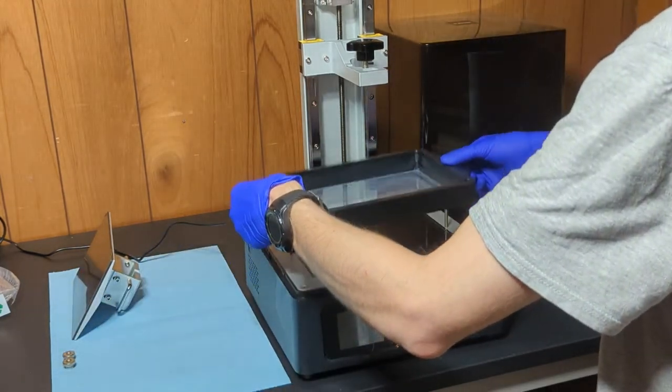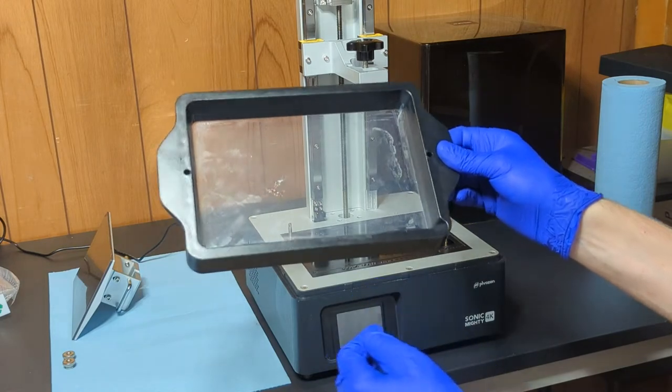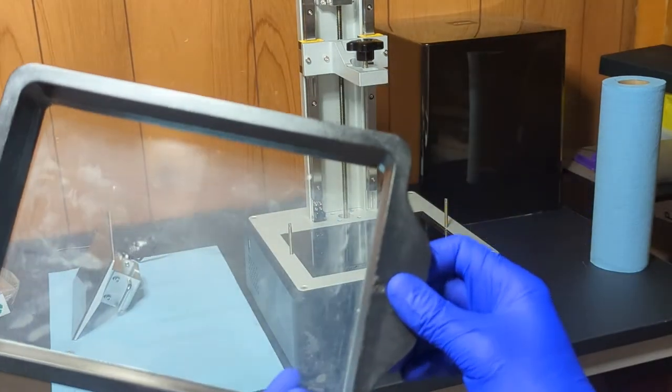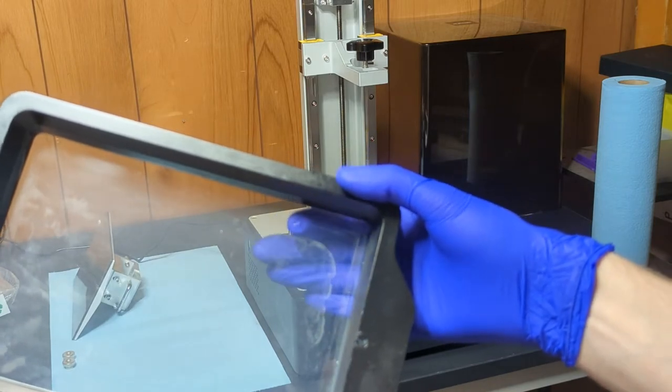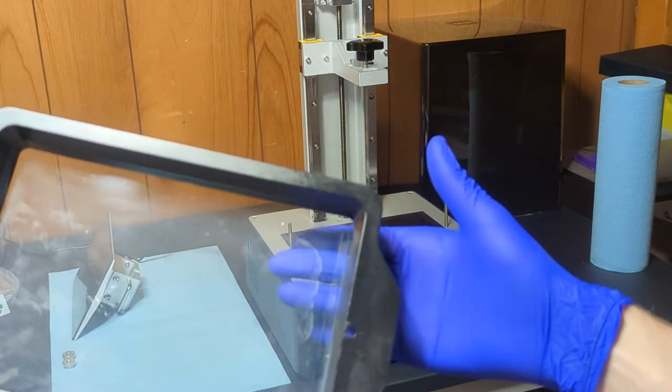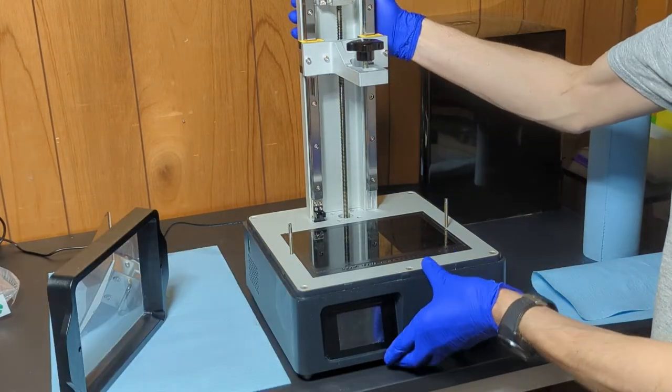Also if you have a print that falls off in the middle of the print and can get smashed into the screen or the film, here you can see there's a little dent in the film, you get dents, scratches, things like that, you'll want to replace the film. And make sure that you clean out, if necessary, in between each print.